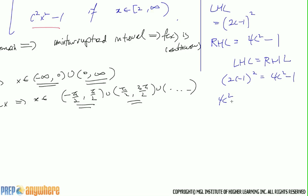So we have four c squared minus four c plus one. Four c squared minus one minus four c is equal to minus two. So c is half. So if c is half, it's continuous everywhere.